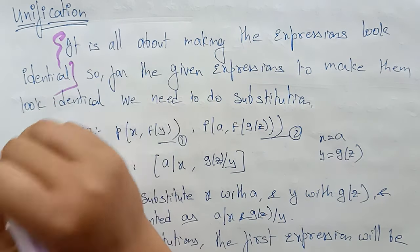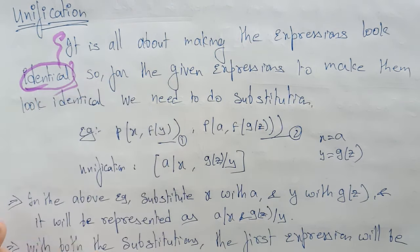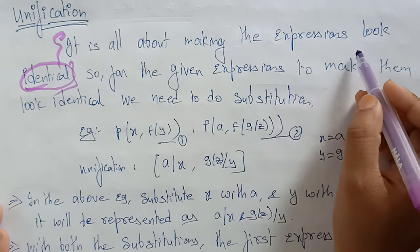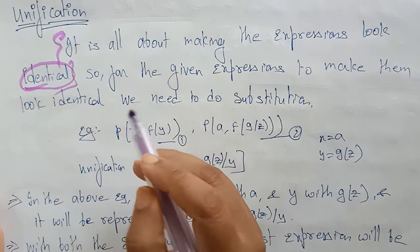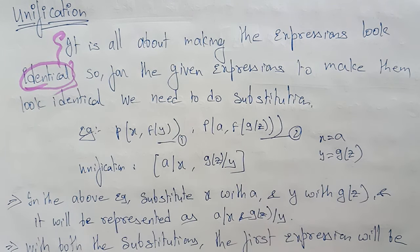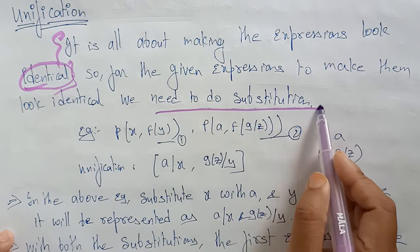When you call it unification, it is when those items are represented as identical — because these two are identical. You have to make the expressions look identical. If it is possible, you can make them look identical. If not possible, simply say there is no unification in that expression. To make the given expressions look identical, we need to do substitution.